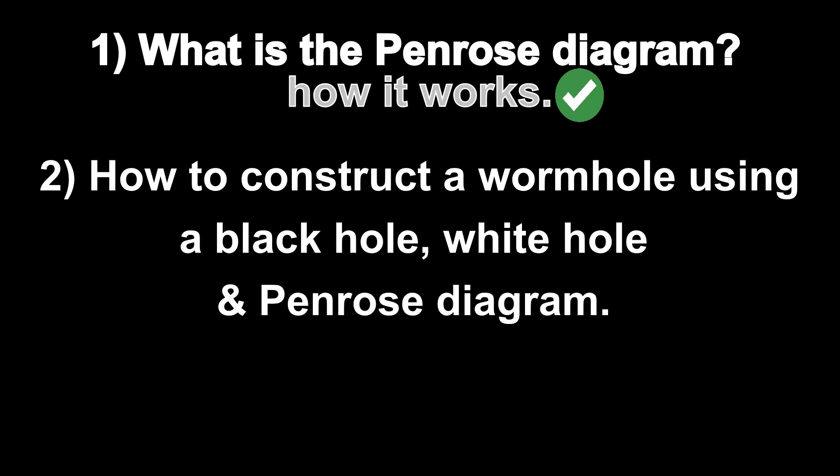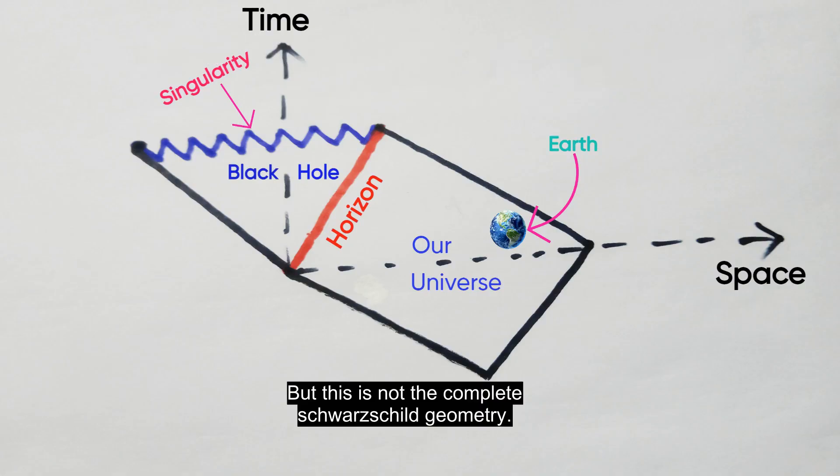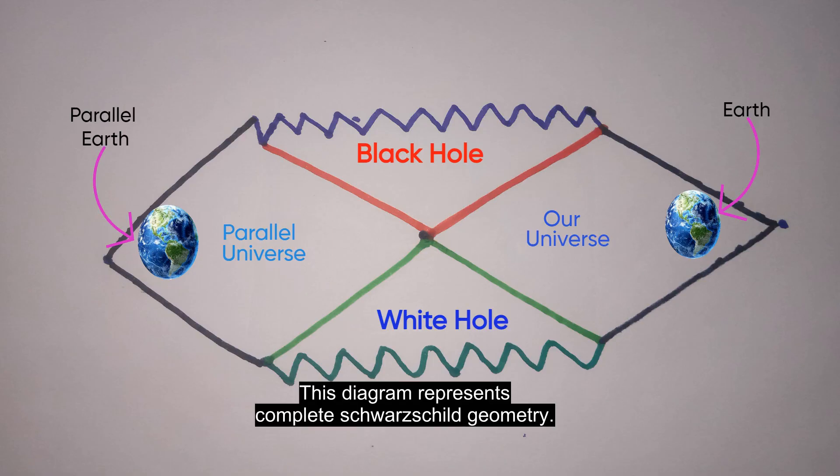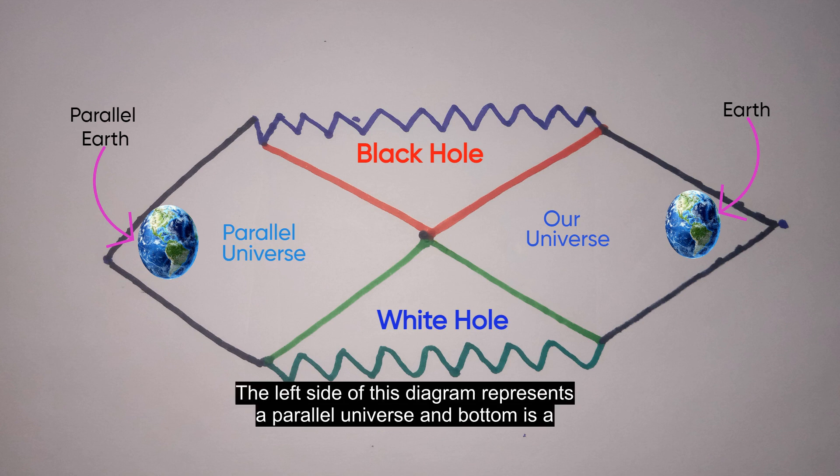But this is not the complete Schwarzschild geometry. This diagram represents the complete Schwarzschild geometry. The left side of this diagram represents a parallel universe, and the bottom is a white hole.